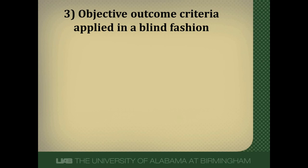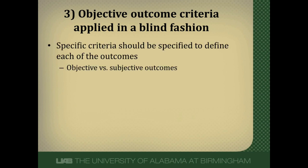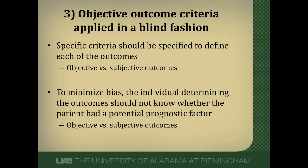Question number three: were objective outcome criteria applied in a blinded fashion? There should be very specific criteria to define each outcome. This is less critical for objective outcomes like death, but for subjective outcomes it's very important to have explicit criteria so that anyone evaluating them would agree. Individuals determining outcomes should not know whether the patient had a potential prognostic factor — otherwise they might look harder for an outcome in one group versus another.